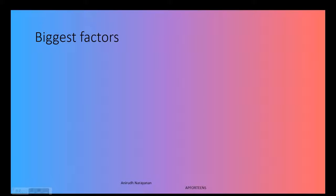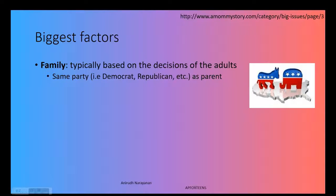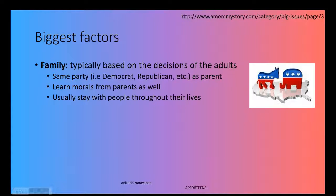The biggest factor that develops a political ideology is typically family, based off of the decisions of adults. You're going to typically have the same party as your parents — if they're Democrat or Republican, children usually follow in that same direction. You learn your morals from your parents, and those values usually stay with people throughout their entire lives, 10, 20, 30, even 50 years down the line. If you look at a lot of politicians today, many of their parents were of the same party.